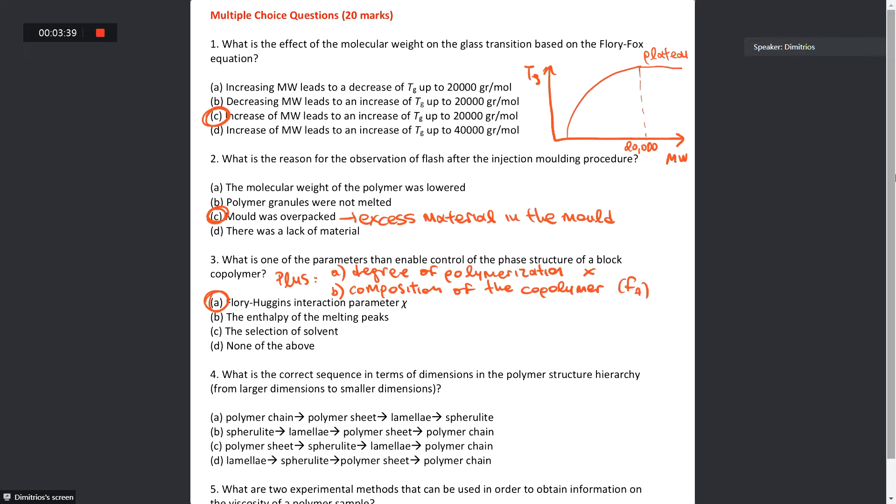That's why you remember we have the phase structure of a block copolymer has a form that looks like that, where in the y-axis we have the Flory-Huggins interaction parameter times the degree of polymerization, and the x-axis we have the composition of the copolymer. And we have graphs that look like that, depending on the composition and depending on this product. This is the phase diagram.